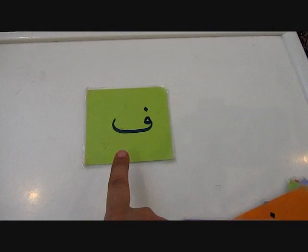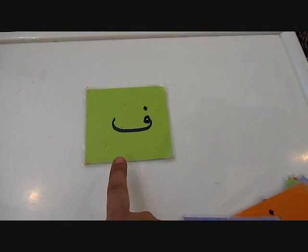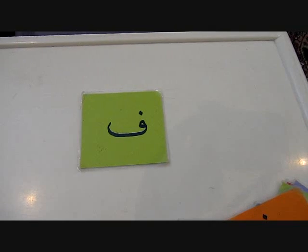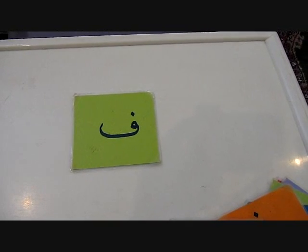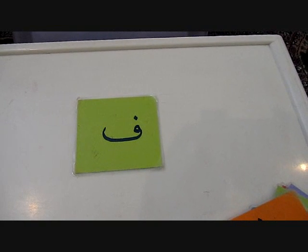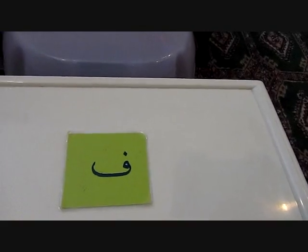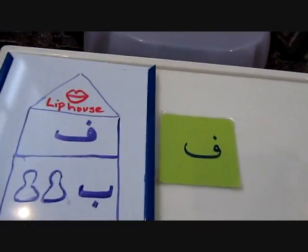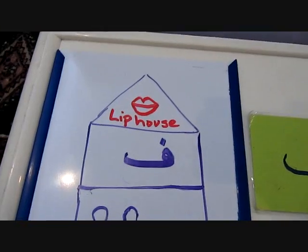As you can see in front of you, there's this letter — Fa. Where does this letter come from? You tell the children that it actually lives in a house, and all the letters actually live in houses. This particular letter lives in the lip house. There you go — there is the lip house.